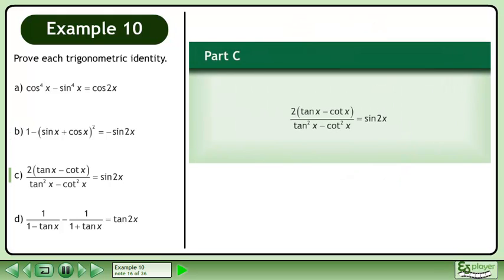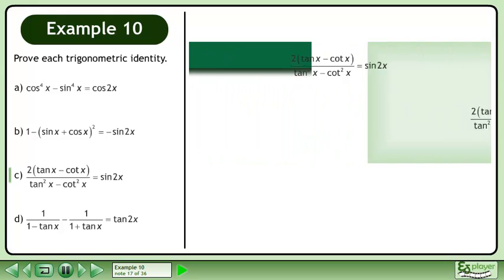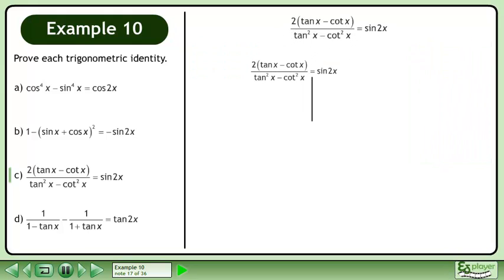In Part C, prove that 2 times tan x minus cotan x over tan squared x minus cotan squared x equals sin 2x. Rewrite the statement and draw a line. Factor the denominator as the difference of squares.